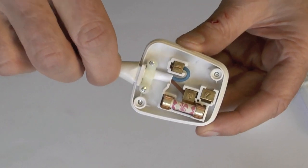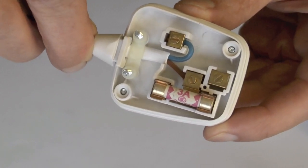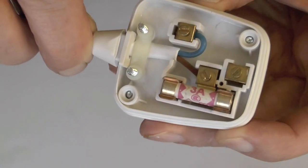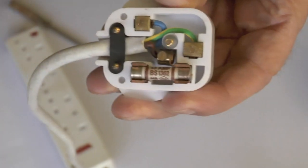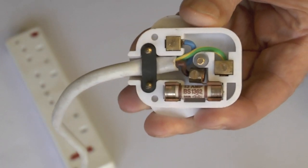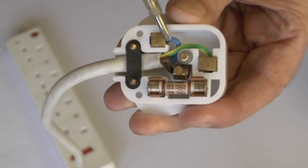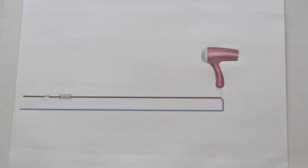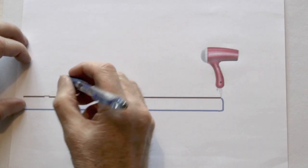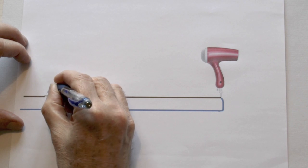Some plugs and therefore the things that they're connected to have no earth wire, but all have a live wire which is the brown and a neutral wire which is the blue. So first of all we'll look at the function of the live wire and the neutral wire.